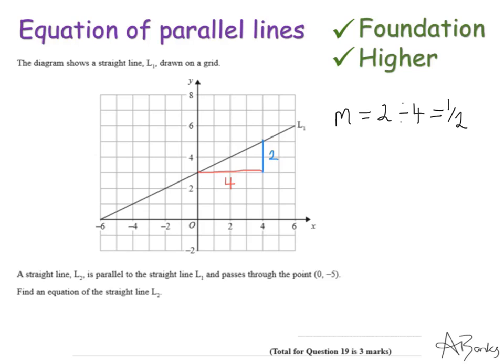So I've got the gradient of my line L2. And as before, they've told me what the y-intercept is in the question because they say it passes through the point 0 minus 5. And if we think about where this is on a set of axes, it's on the y-axis. So the y-intercept is minus 5. So the equation of the line L2 is y equals 1 half x minus 5.